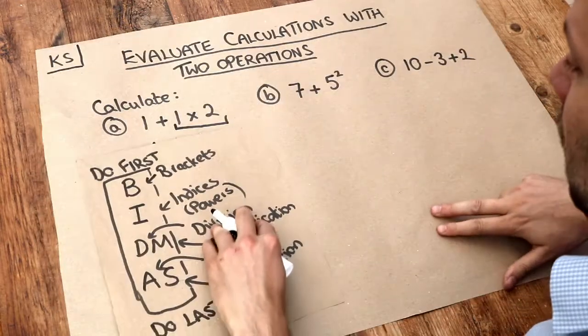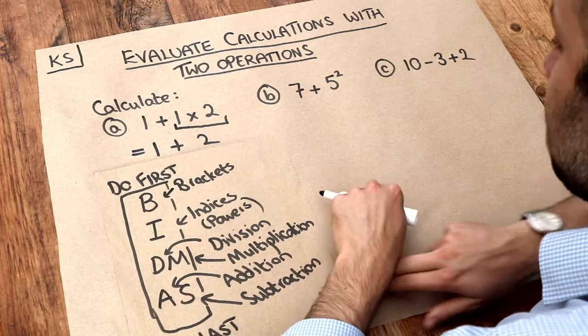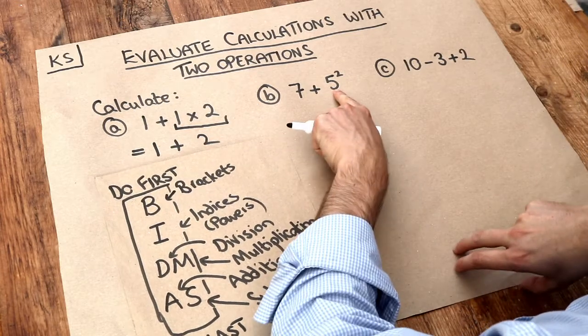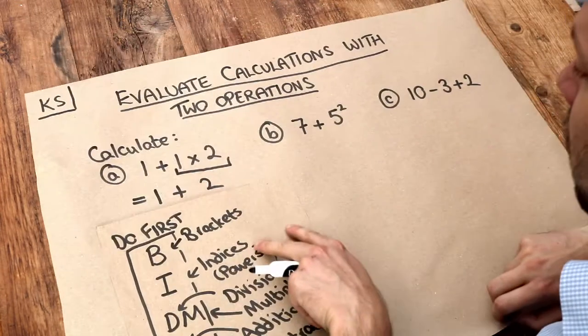About this second one, what do we have? Let's look it up in this table here. We've got 7 plus 5 squared. Now there's two things going on here. We've got this squared operation here, which is a power, and we've got this addition.